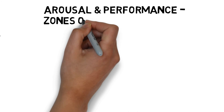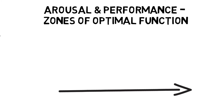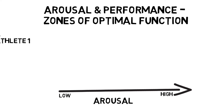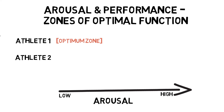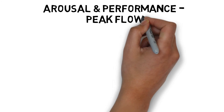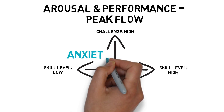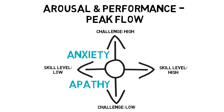Zones of optimal function suggest that rather than occurring at the midpoint of the arousal spectrum, there is an optimal zone in which a performer will achieve optimal performance. This zone can alter depending on the type of skill, level of performance, and personality of the performer. Peak flow theory suggests that there is a relationship between task demands and the skill of the performer, and peak flow can be produced when these factors are at optimal levels to produce effective performances.